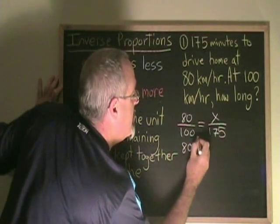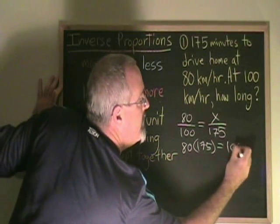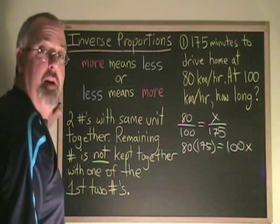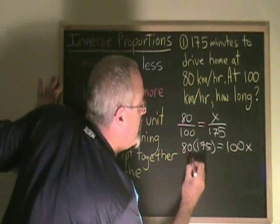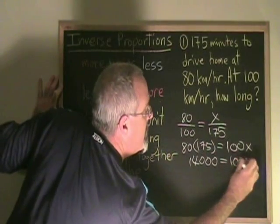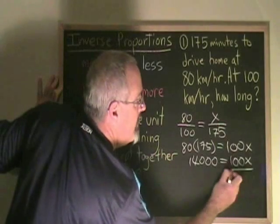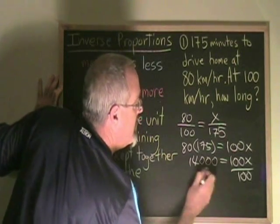I get 80 times 175 equals 100x. 80 times 175 is equal to 14,000. So I have 14,000 equals 100x. I divide both sides of the equation by 100.